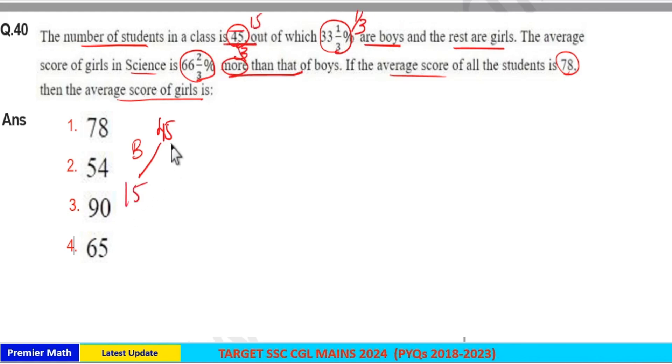15 are boys, means remaining 30 are girls. And here 66⅔% means 66×3 is 198, 198+2 is 200. 200/3 percentage means ⅔ is the fraction.